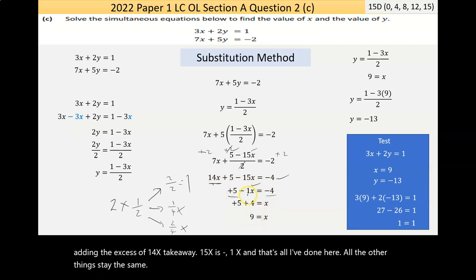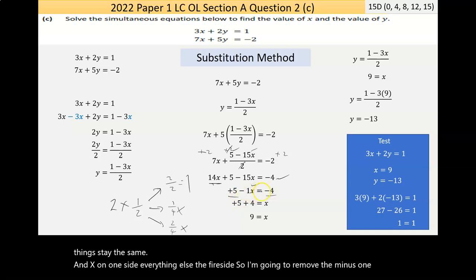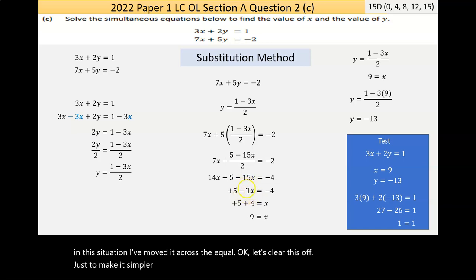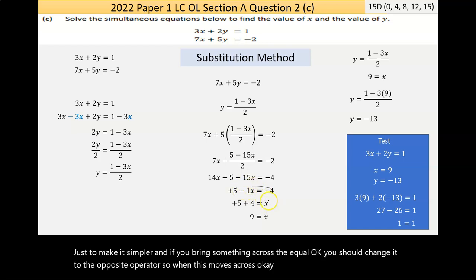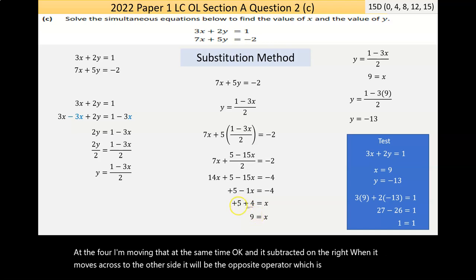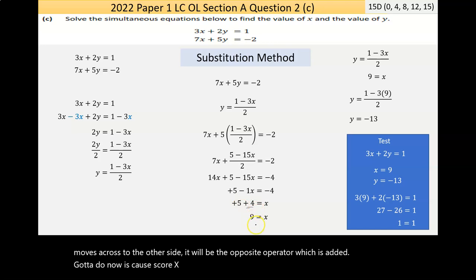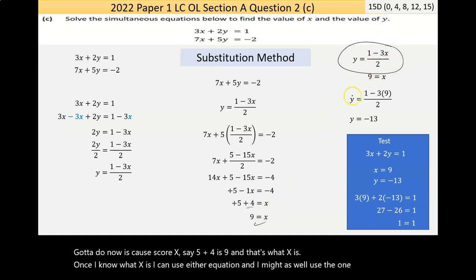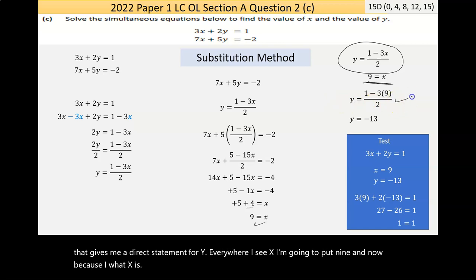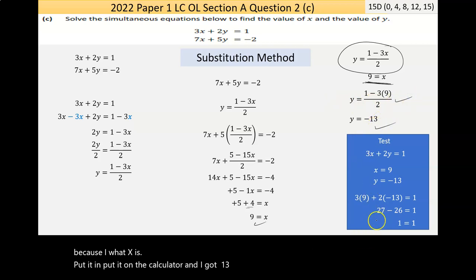I want x on one side, everything else the other side. So I'm going to remove the minus 1x. And in this situation, I've moved it across the equal. So let's clear this off, just to make it simpler. And if you bring something across the equal, you should change it to the opposite operator. So when this moves across, it was subtracted. Now it's added. Now the 4, I'm moving that at the same time. And it's subtracted on the right. When it moves across to the other side, it'll be the opposite operator, which is added. Now all I'm going to do now is just go 5 plus 4 is 9, and that's what x is. Now once I know what x is, I can use either equation. And I might as well use the one I rearranged that gives me a direct statement for y. Everywhere I see x, I'm going to put 9, because I now know what x is. Put it in, put it to my calculator, and I got negative 13. Again, I tested it here to make sure that left side equals right side. But again, you're not being asked that.